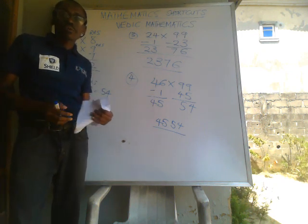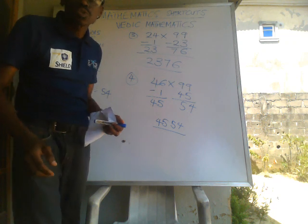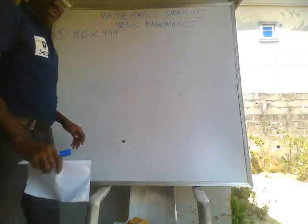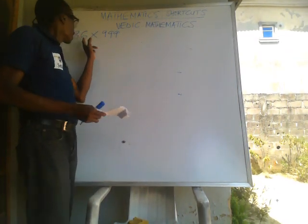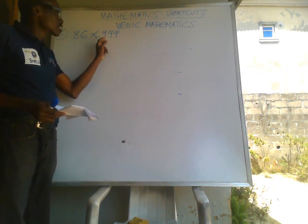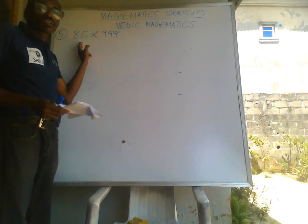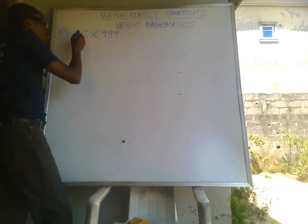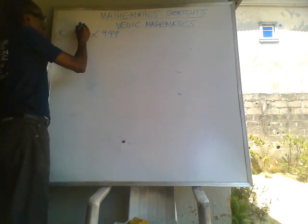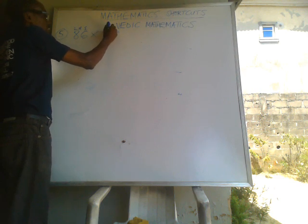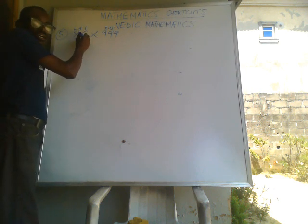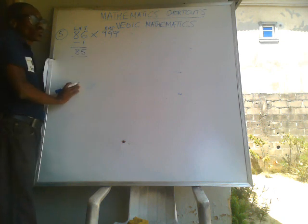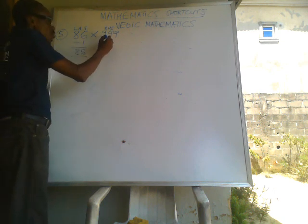Can this method work when the numbers are larger? Yes, it can. In the next example we're going to try 86 times 999 — a three-digit number of nines with a two-digit number. Just like before, this is the left hand side and this is the right hand side. So 86 minus 1 gives you 85.